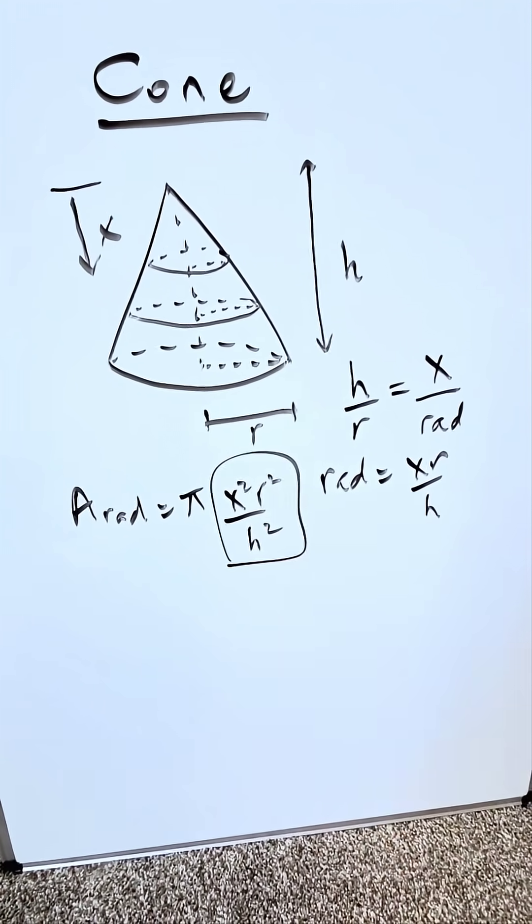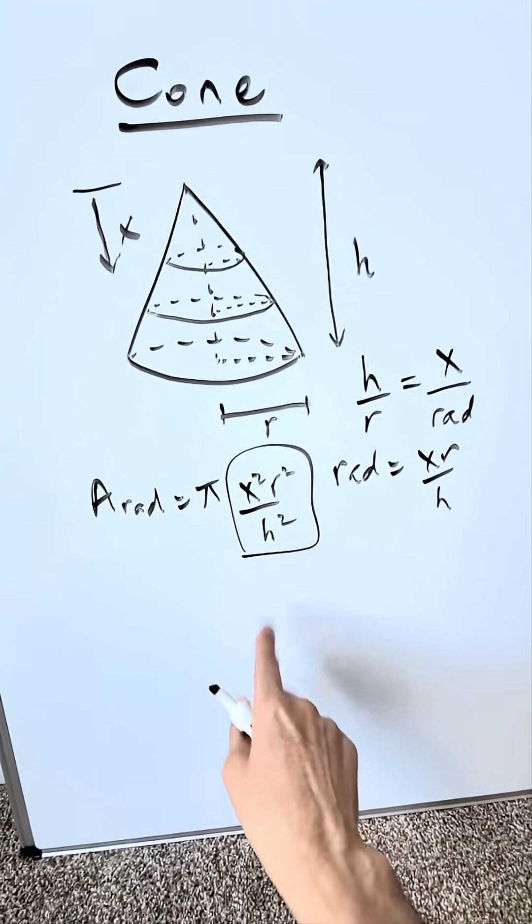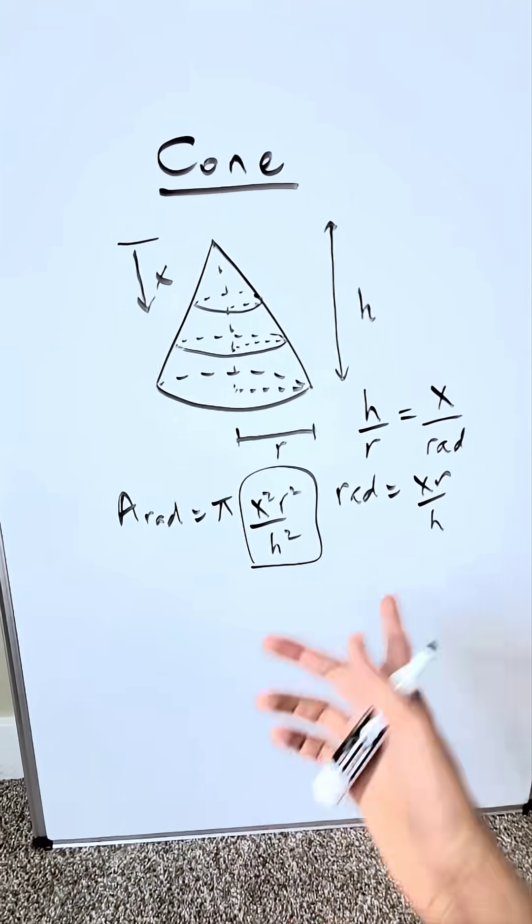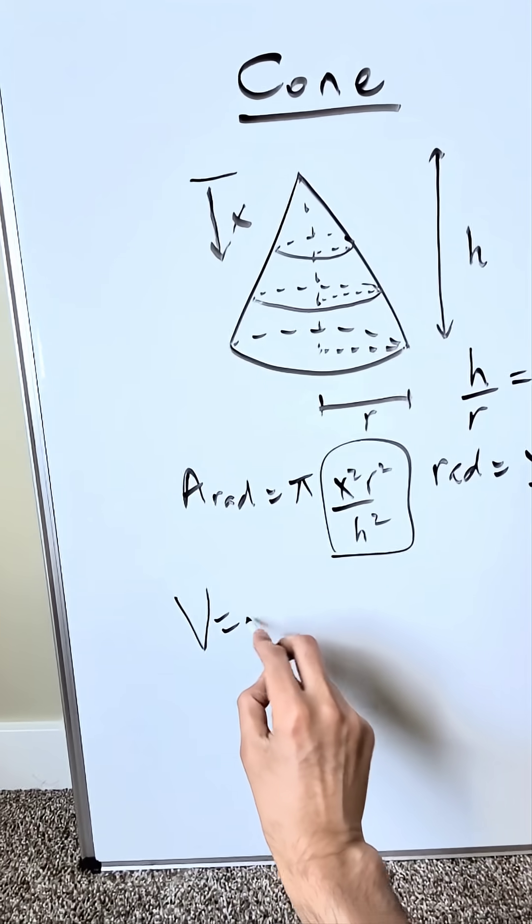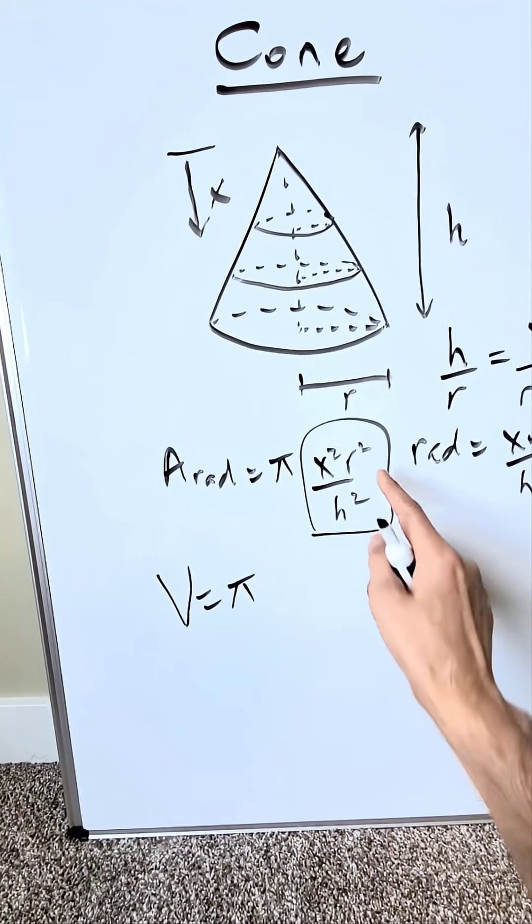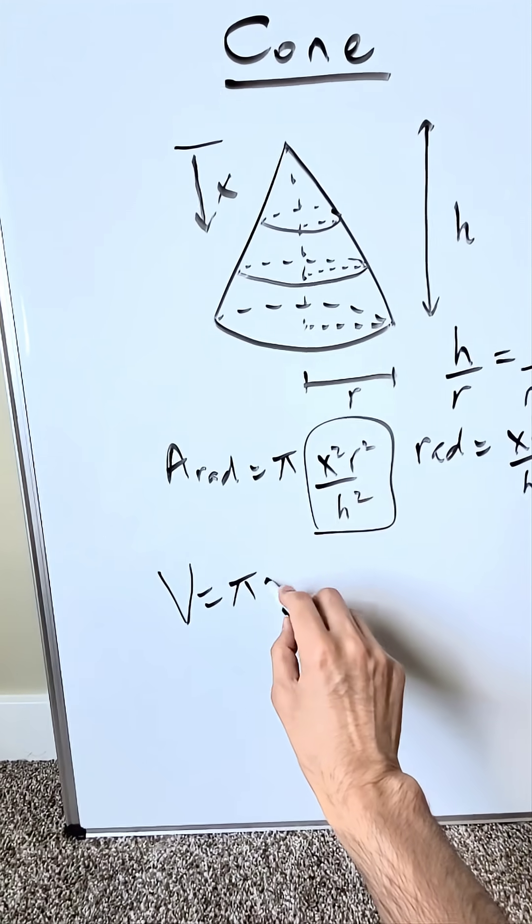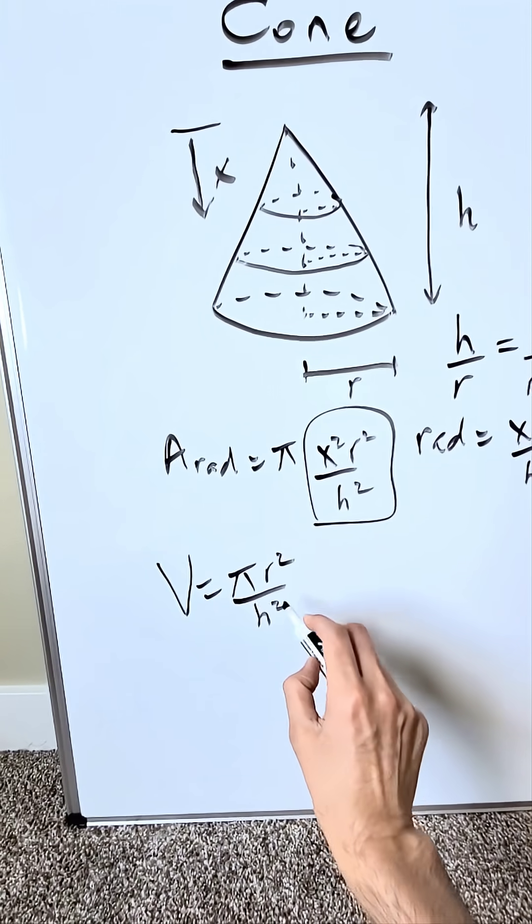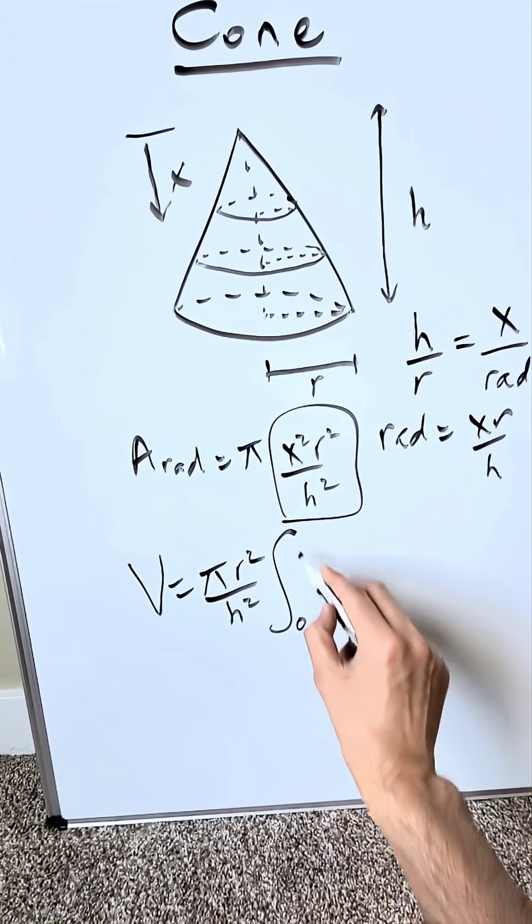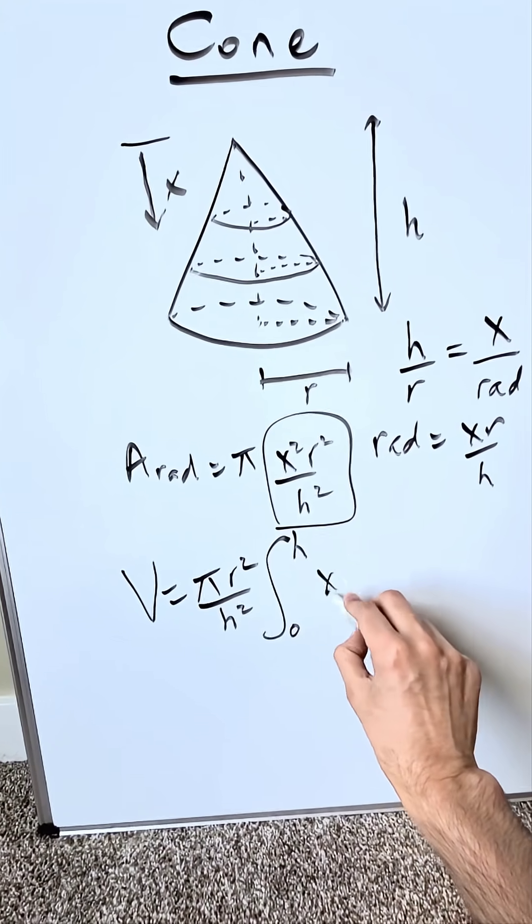Now this is what you would integrate in terms of your cross-sectional slices from a lower limit to upper limit to get a volume. You have volume is equal to pi pushed out, but you might as well push out the r square and the h square because they're constants as well, from your base to your apex of your cone: x square dx.